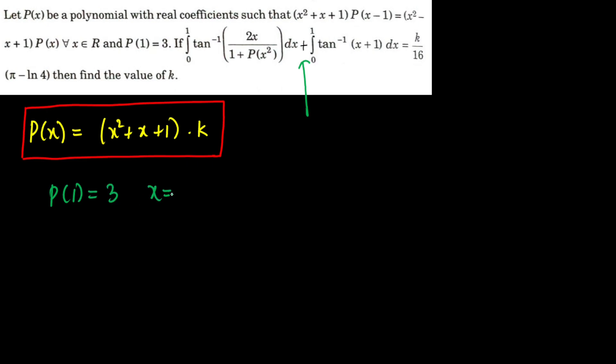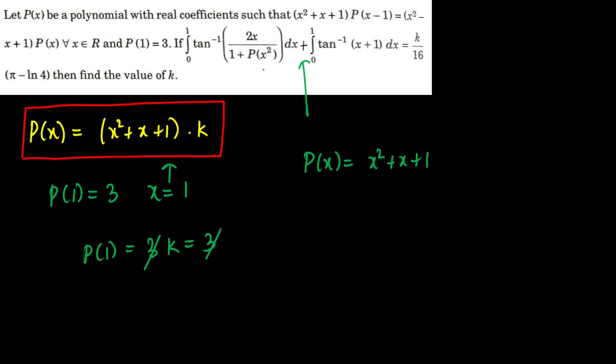Before continuing, there is a small correction: between the two integrals in the problem, there is a positive sign — they are being added, not set equal. Apologies for that error. Now, since P(x) = x²+x+1, we get P(x²) by replacing x with x²: P(x²) = x⁴+x²+1. We now substitute this into the integral.